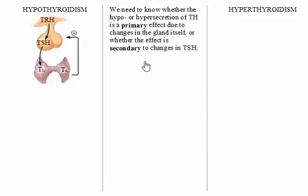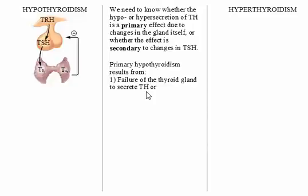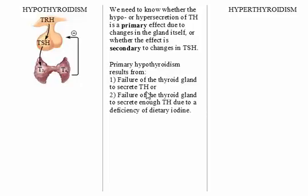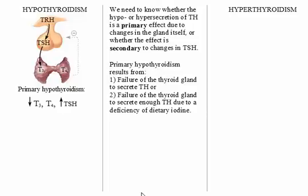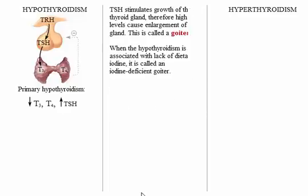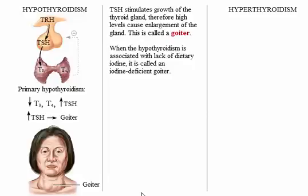Let's look at primary hypothyroidism first. It results from failure of the thyroid gland to secrete thyroid hormone, or failure of the thyroid gland to secrete enough thyroid hormone due to a deficiency of dietary iodine. In both cases, the amount of T3 and T4 secreted diminishes. As plasma levels of thyroid hormone fall, the inhibition to the anterior pituitary is interrupted, and the anterior pituitary secretes increasing amounts of TSH. Remember that TSH stimulates growth of the thyroid gland; therefore high levels cause enlargement of the gland. This is called a goiter.